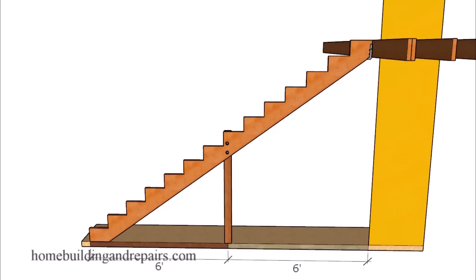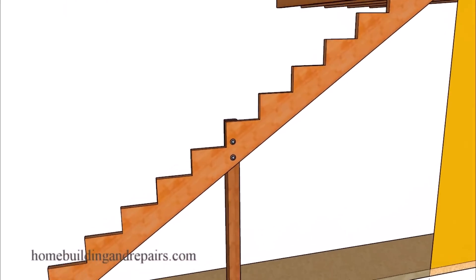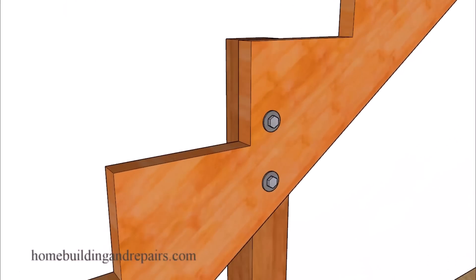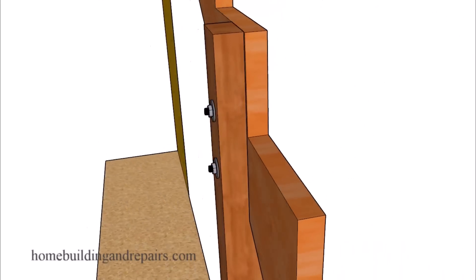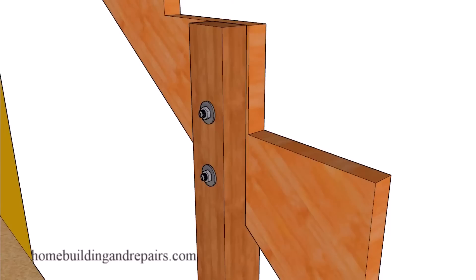Next up let's go ahead and take a look at how the post can connect to the stringer with two half inch bolts with washers on each side. However I did find another example where they suggested using two number eight wood screws that can be longer than three inches, just not shorter than three inches, if the post is not going to be used for a guardrail.